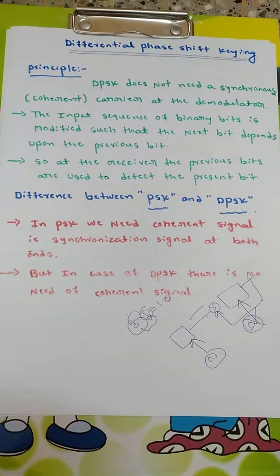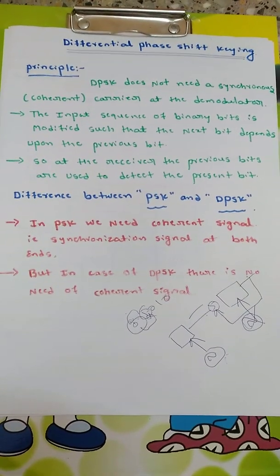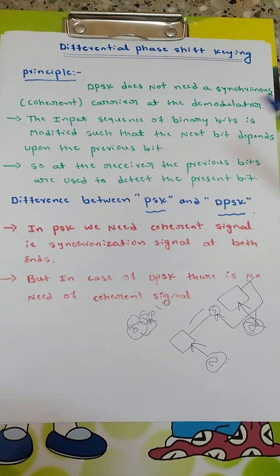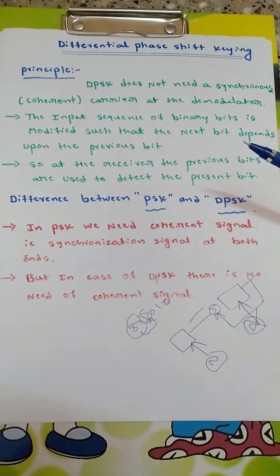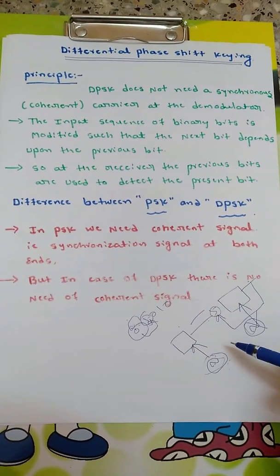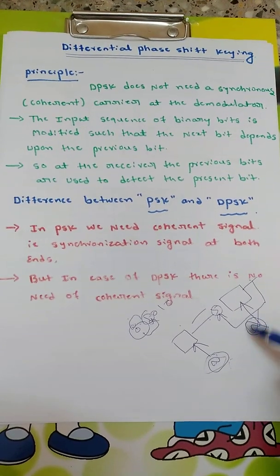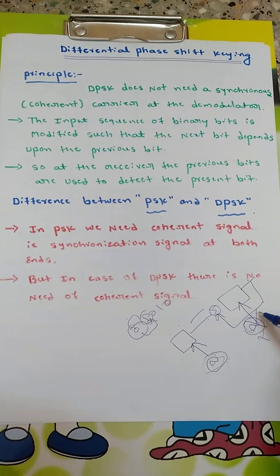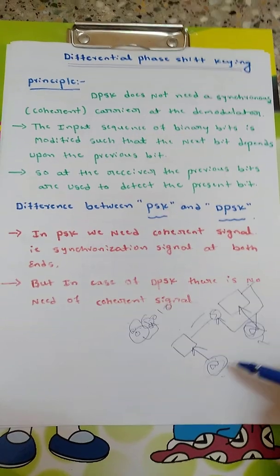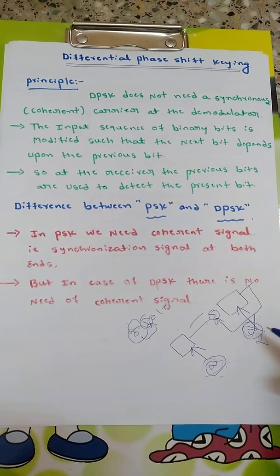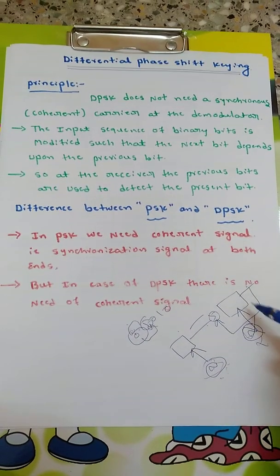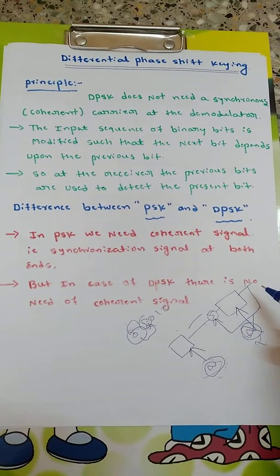The main principle behind differential phase shift keying is that DPSK does not need a synchronization carrier at the demodulator. In case of PSK, we need a carrier at both transmitter and receiver. But in DPSK, we don't need a carrier at the receiver side. Only the carrier will be at the transmitter side, and by combining the input data and feedback we determine the next data.